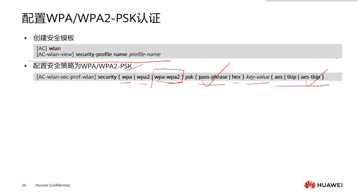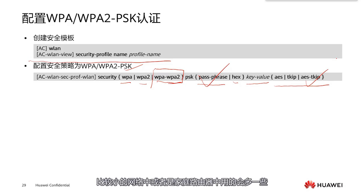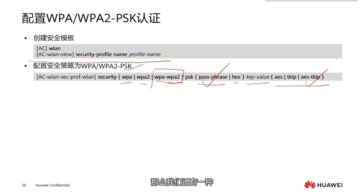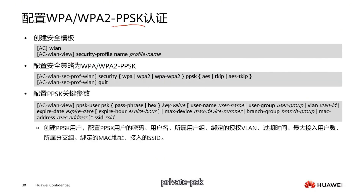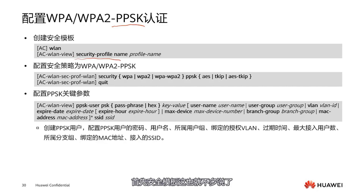This type of authentication is generally used in smaller networks or home routers. If we are a very large enterprise and our security requirements are high, then we have another type called PPSK authentication — Private PSK. Let's see why it's called PPSK and look at the configuration. First, the security template.